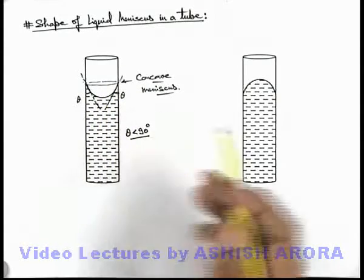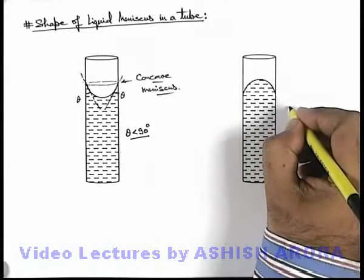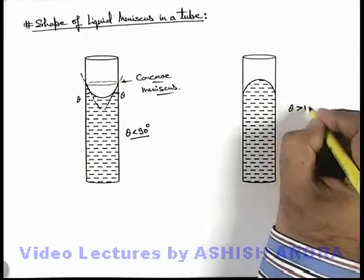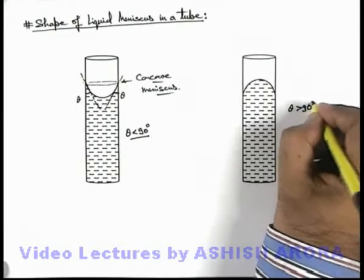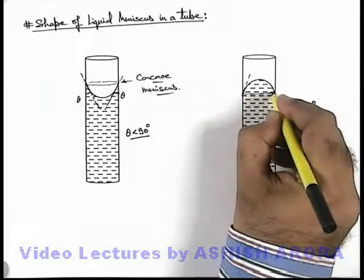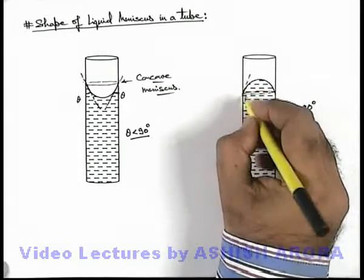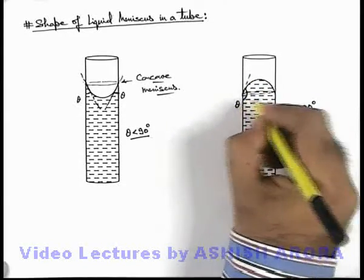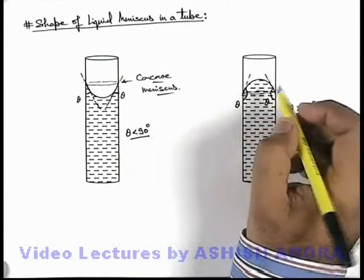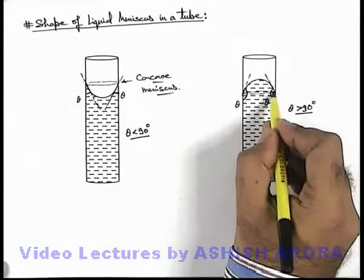And vice versa we can say, when for a given liquid and a solid pair angle of contact is more than 90 degree, then we can see when the liquid is filled, at every point where liquid is in contact with the tube wall, the angle made will be obtuse. And due to this only you can see, a convex meniscus is obtained.